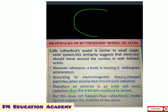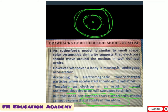As electrons emit radiation and lose energy, the orbit will continue to shrink. Thus, Rutherford's model cannot explain the stability of the atom — because if the orbits shrink due to radiation emission, the atom cannot remain stable. This is the first drawback of Rutherford's model of atom.